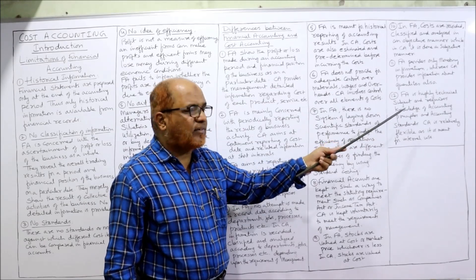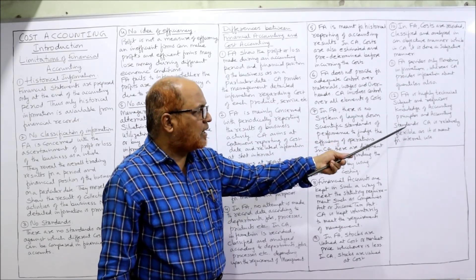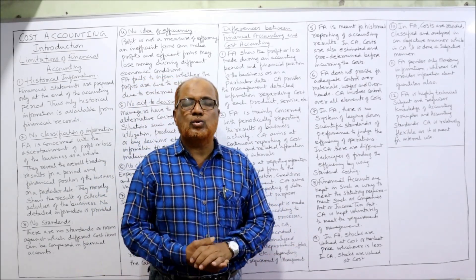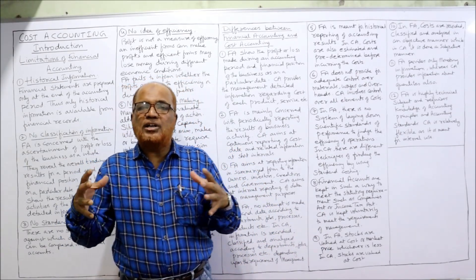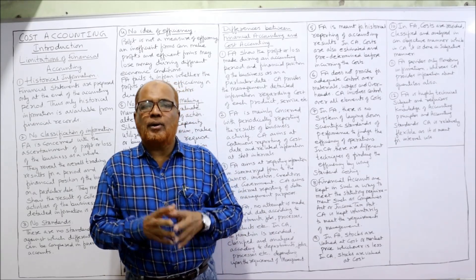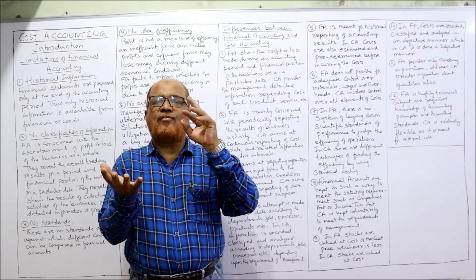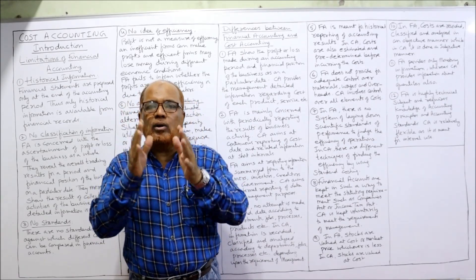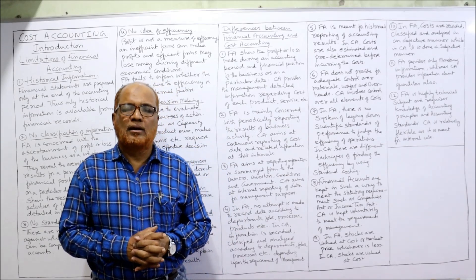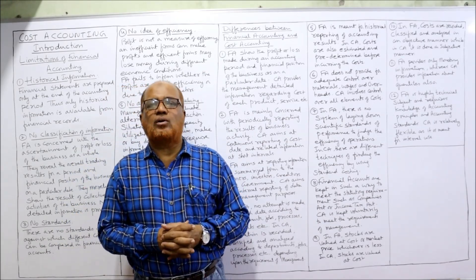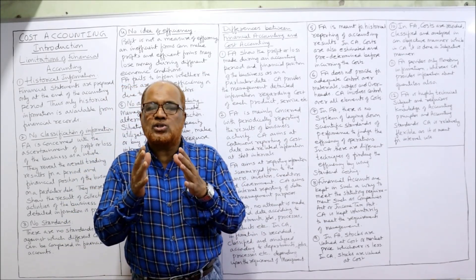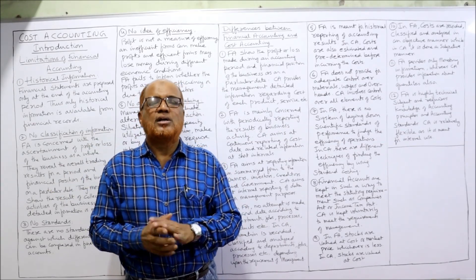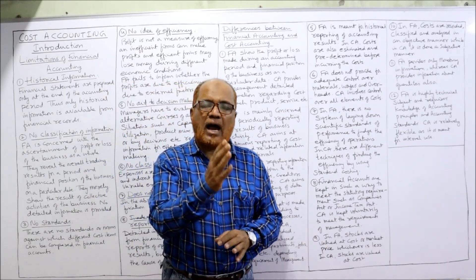Financial accounting is a highly technical subject requiring knowledge of accounting principles and accounting standards — there is more rigidity, as every financial accountant must follow accounting concepts, principles, and standards. Whereas cost accounting is relatively flexible because the reports are prepared for the internal use of management, so there is more flexibility in cost accounting.